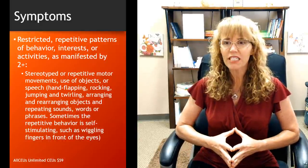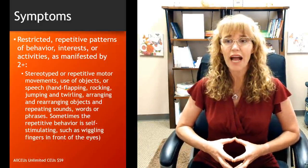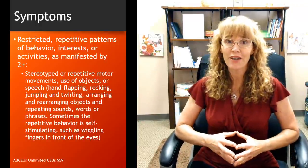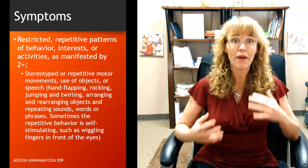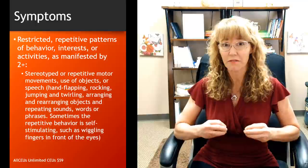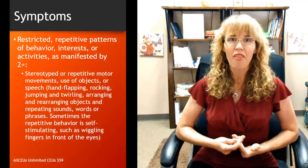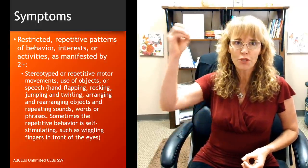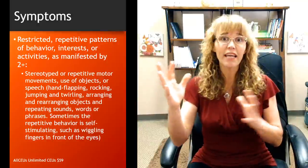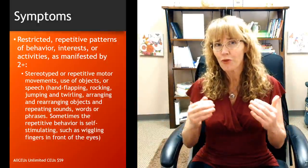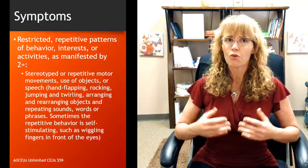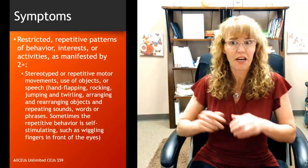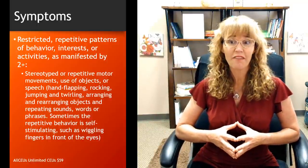People with autism may also show restricted, repetitive patterns of behavior, interests, or activities — and they must manifest two or more of the following characteristics. For the first three criteria, the person must have behaviors representing all of them. When making a diagnosis, you can't use the same behavior to meet multiple criteria — you need different behaviors for each criterion to ensure an accurate diagnosis.